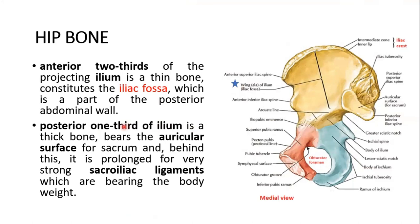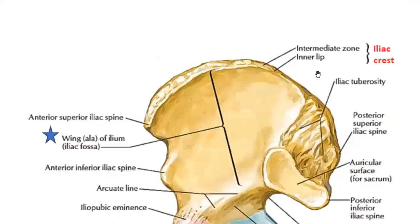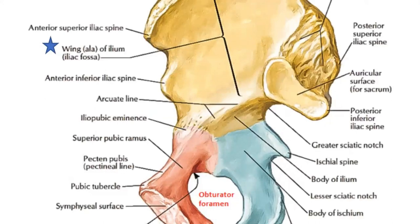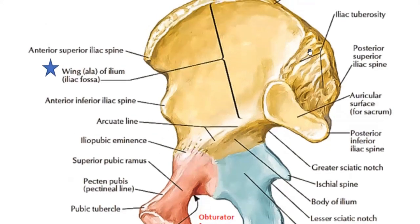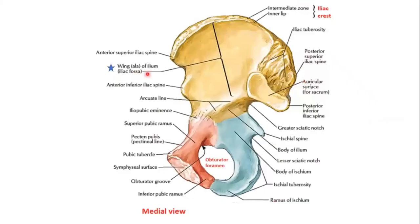The posterior one-third of the ilium is a thick bone. This is the auricular surface of the sacrum for the sacroiliac joint, and posterior to that is the iliac tuberosity where the various ligaments are attached. Behind this are the prolonged, very strong sacroiliac ligaments which bear the body weight.